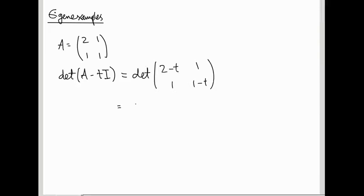That's 2 minus t times 1 minus t, minus 1. As usual, if you're sitting here just looking at this video, pause the video, do the calculation for yourself, skip forwards to see if you got the right answer, and if not, then maybe watch it back. Otherwise you're wasting your time. Okay, so this is t squared minus 3t plus 2 minus 1, so plus 1.